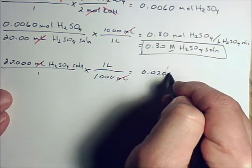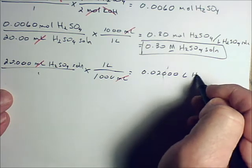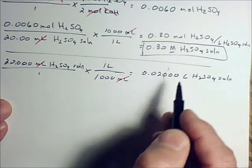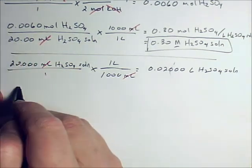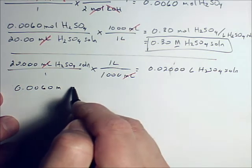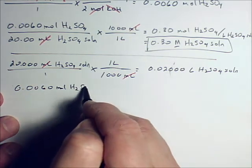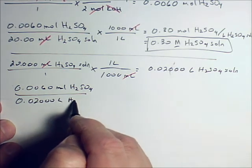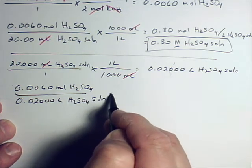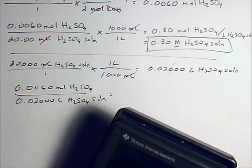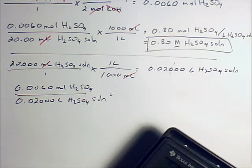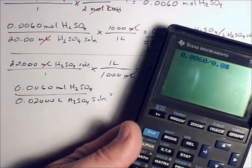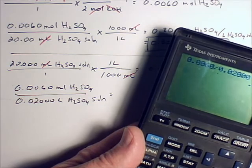0.02000 liters H2SO4 solution. So, this is the method B here. And so, now we take this number here, 0.0060 moles H2SO4, and put it over that number, 0.02000 liters H2SO4 solution. 0.0060 divided by 0.02000, and I've got the same answer.